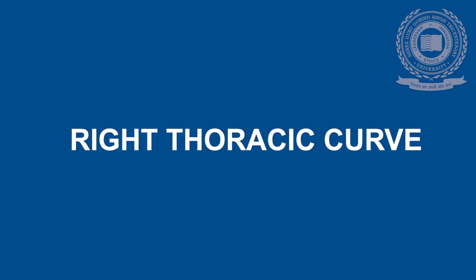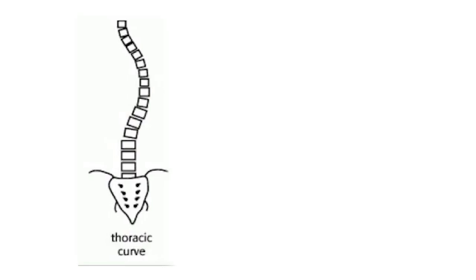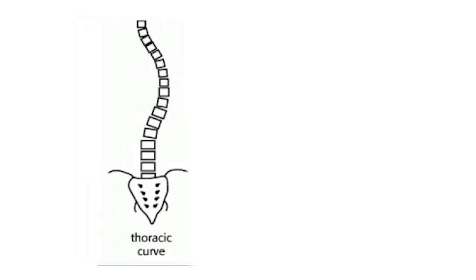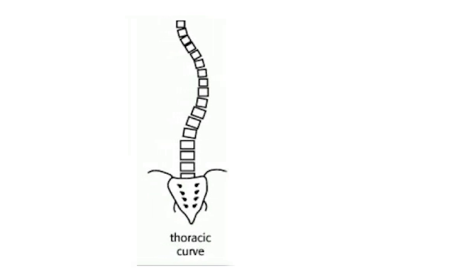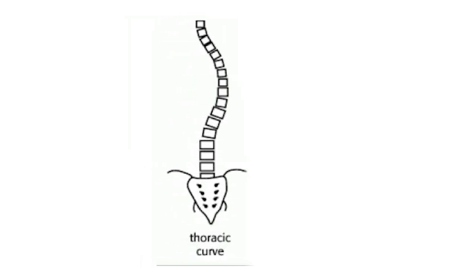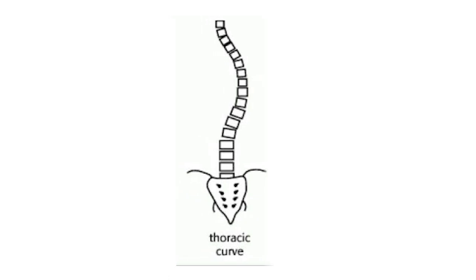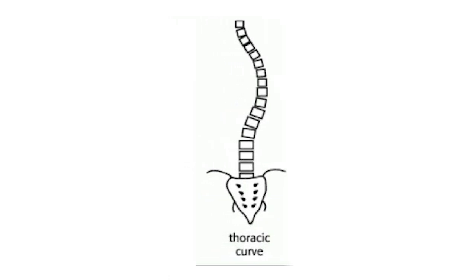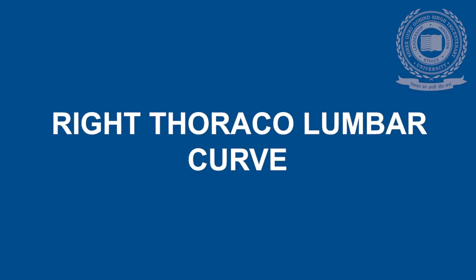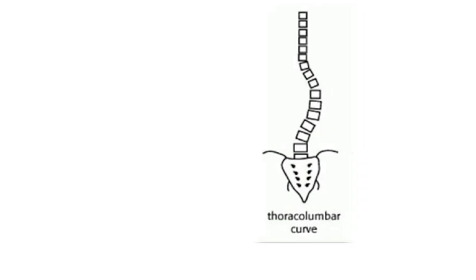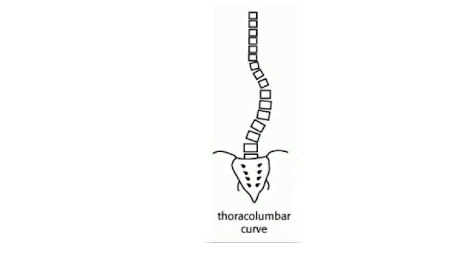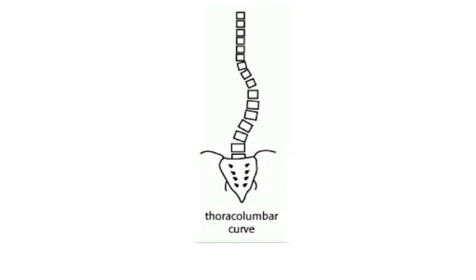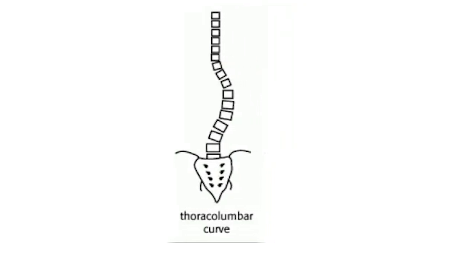Right thoracic curve: if a straight line were drawn down the center of the back, this curve bends to the right side of the upper back. Right thoracolumbar curve: this curve bends to the right side, starting in the upper back and ending in the lower back. Right lumbar curve: this curve bends to the right side of the lower back.